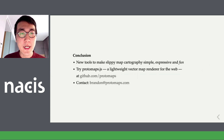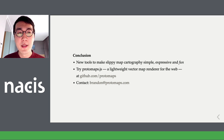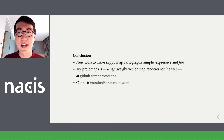In conclusion, I am working on new tools to make slippy map cartography more simple, expressive, and fun. You can try Protomaps.js, a vector map renderer for the web, on GitHub and use it for your projects. If you have questions or ideas on how to improve this, feel free to contact me. Thanks.